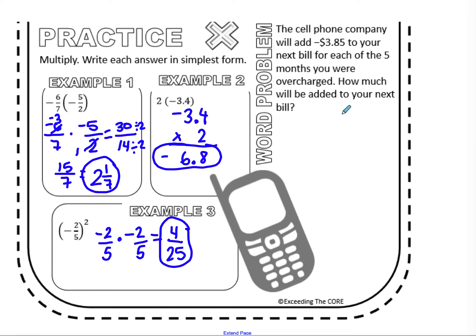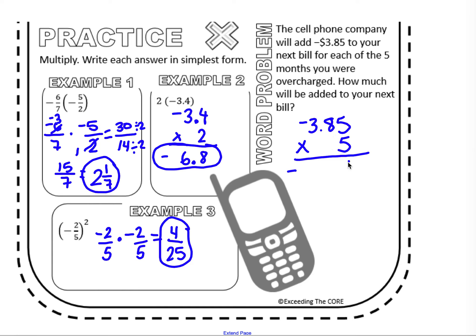Now the word problem: a cell phone company will add negative $3.85 to your next bill for each of the 5 months you were overcharged. How much will be added to your next bill? I'll write the number with the most place values on top — $3.85 has 3 digits, and 5 only has one digit. I'm lining up my last digits; I do not need to add placeholder zeros or line up decimal points. That only makes the problem more complicated. I have different signs, so I know my final answer will be negative.